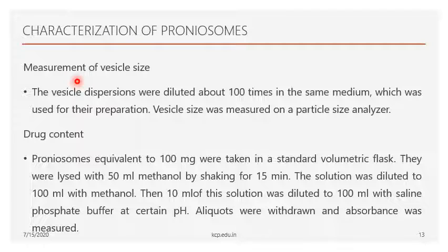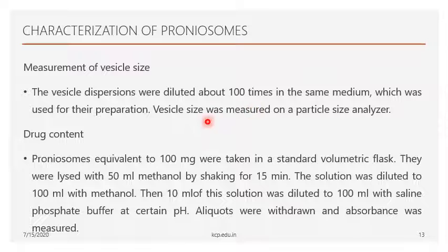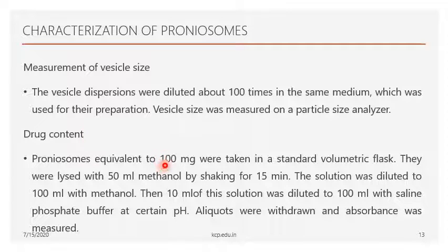Vesicle size is measured using a particle size analyzer. A small amount of sample is taken and diluted up to 100 times with the same medium used for preparation. After dilution, the sample is measured under the particle size analyzer to determine the vesicle size of the proniosomes.